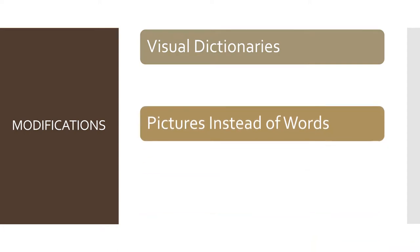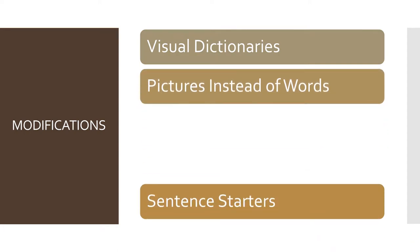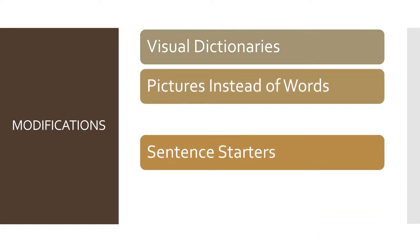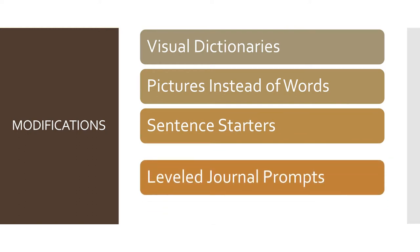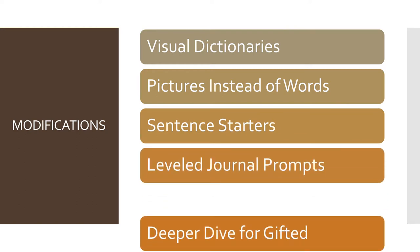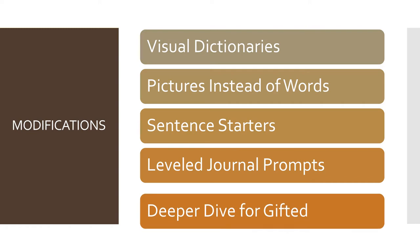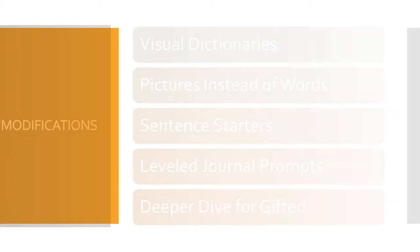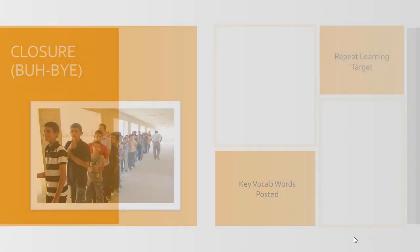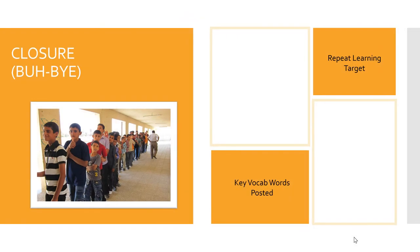Modifications for differentiated instruction include visual dictionaries using pictures in place of words, sentence starters, leveled journal prompts, and a deeper dive predictions presentation for gifted students. To close the lesson, students will have the opportunity to complete a journal entry.